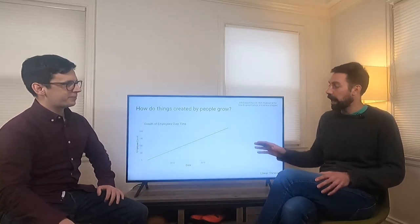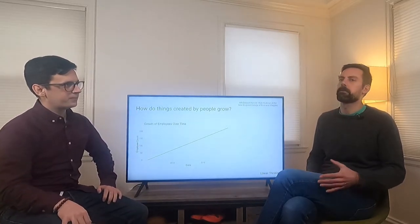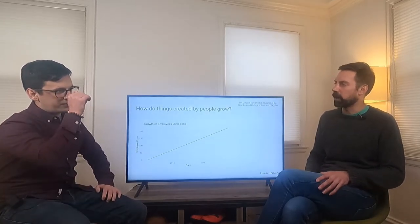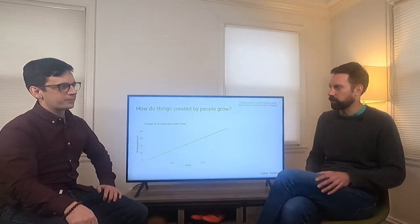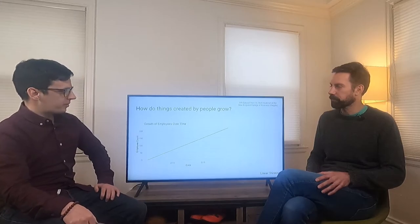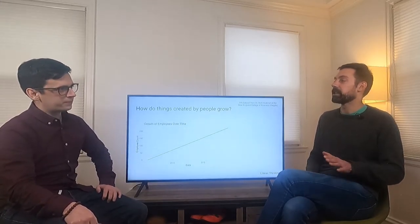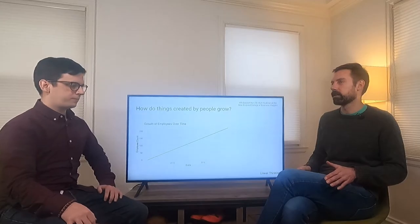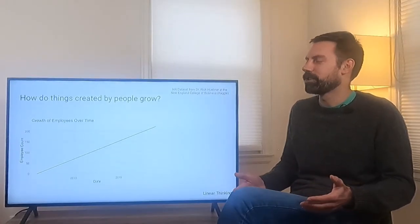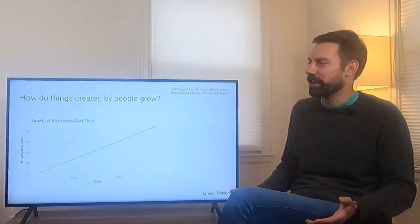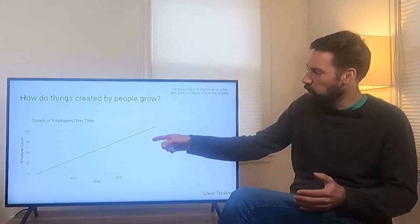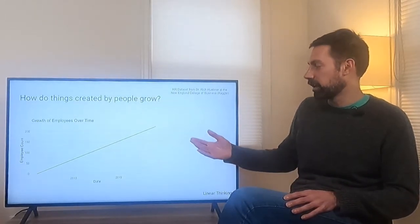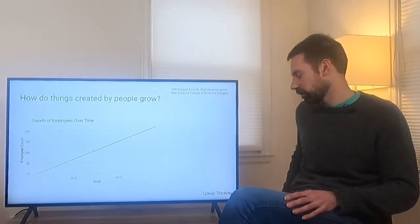Another example of linear growth outside of this: the further something is away, the longer it's going to take me to drive there — that's a linear relationship. Linear relationships are very easy to think about; they simplify the world for us. The problem is that a lot of relationships are not linear — the line won't be this straight. Why don't we look at the data and see what the line actually looks like?